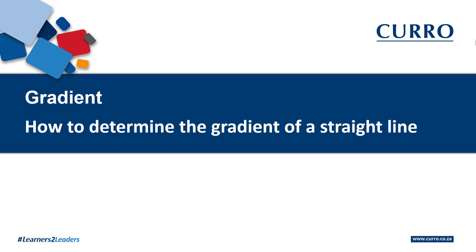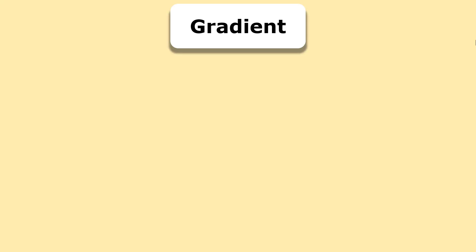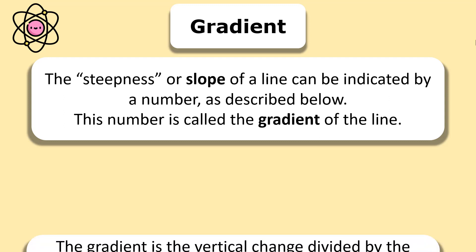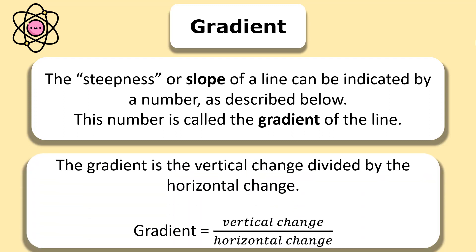How to determine the gradient of a straight line. Here is the definition: the steepness or slope of a line can be indicated by a number. This number is called the gradient of the line. The gradient is the vertical change divided by the horizontal change. Remember this formula — it's not horizontal divided by vertical, but vertical divided by horizontal.